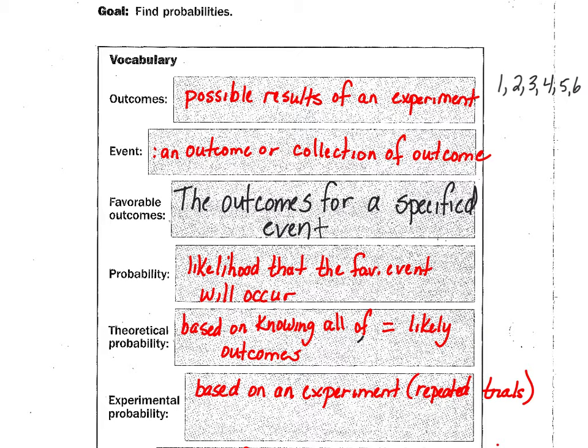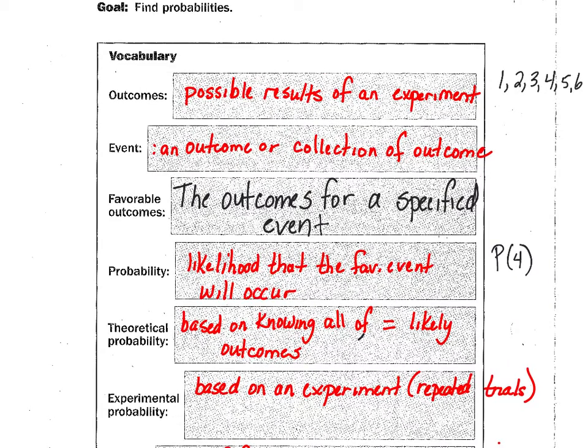An event is the outcome or the collection of outcomes. So they might say, we're going to talk a lot about probability. They'll say probability of a four. It will be written like that. Probability of a four. The event is rolling a die. The favorable outcome would be the four.